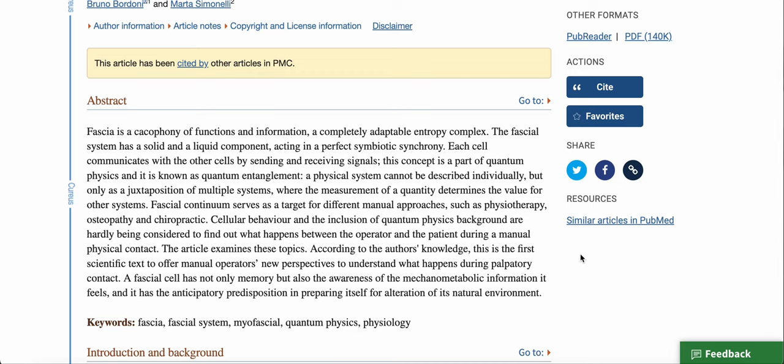The article examines these topics. According to the author's knowledge, this is the first scientific test to offer manual operators new perspectives to understand what happens during palpatory contact. A fascial cell has not only memory, but also the awareness of the mechanometabolic information it feels. And it has the anticipatory predisposition in preparing itself for alteration of its natural environment. So that's basically saying that if I'm working on you, your fascia can feel mine. Your fascia can interpret the information that my body has.